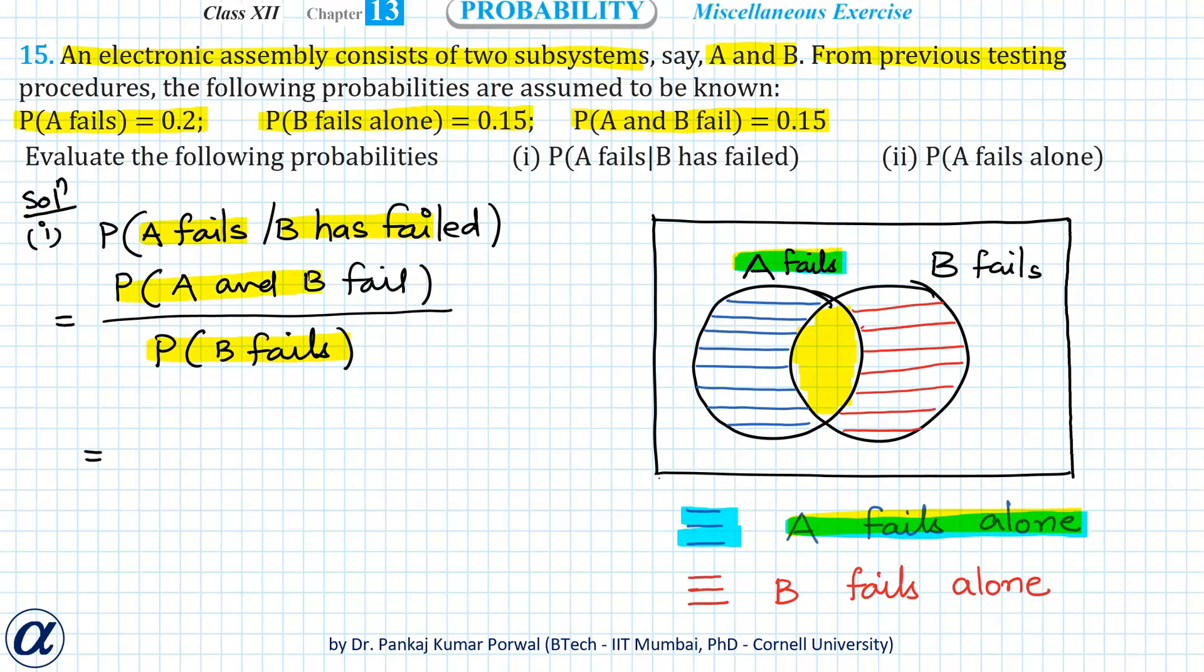So here this will be equal to probability of A and B fail, that is 0.15, divided by probability B fails is 0.3. This will cancel, so I get 1 by 2.